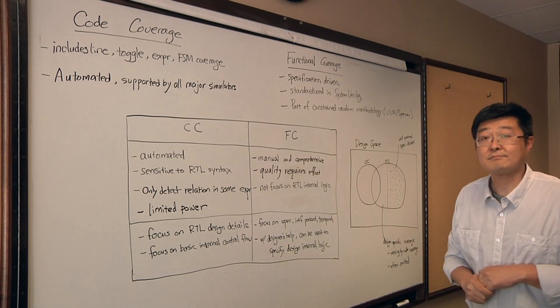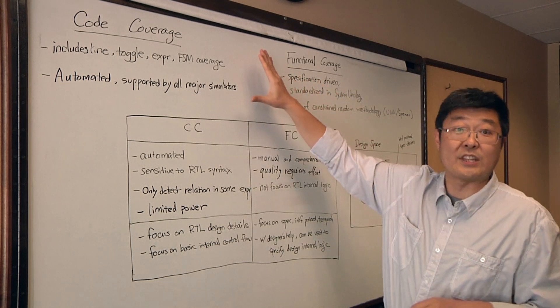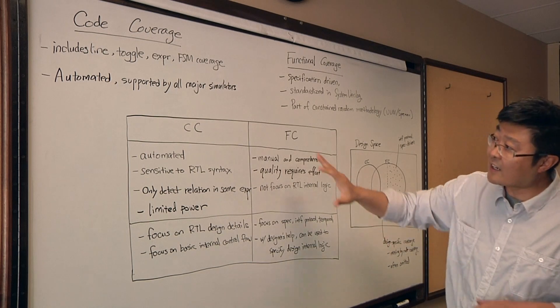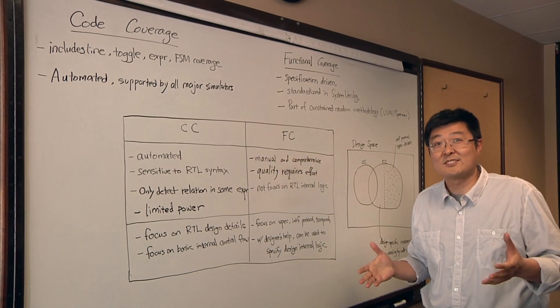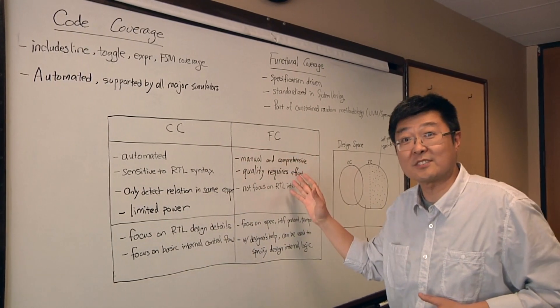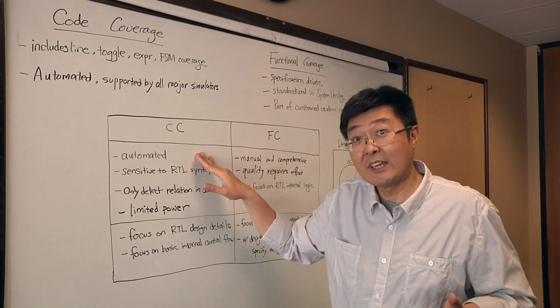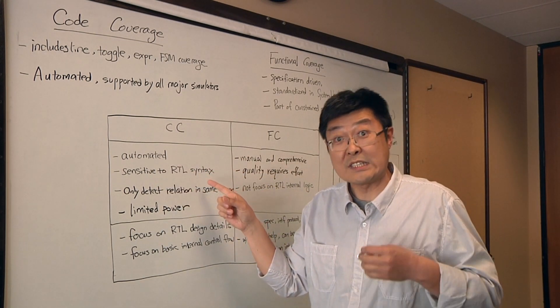So where are engineers running into problems with this? This is the state of the art, using both code coverage and functional coverage. After I compare these two, you will see what the problem is. Let me compare these two different approaches. As I said before, code coverage is automated because it's structure-based, therefore it's sensitive to the RTL syntax.